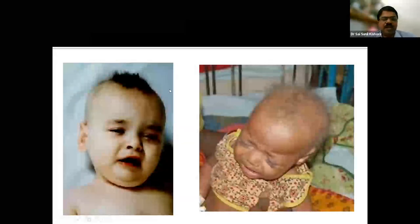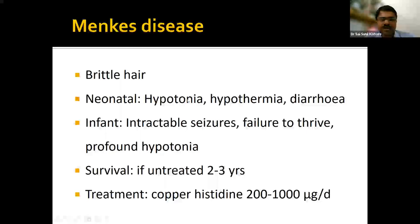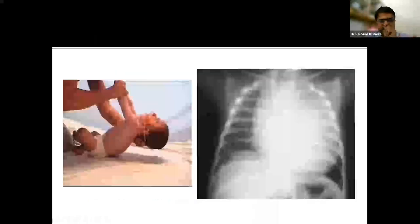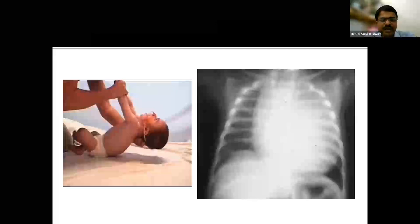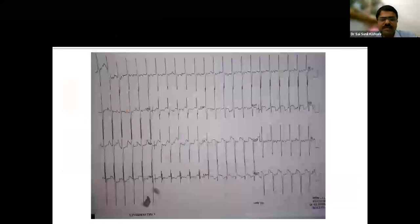Menkes disease presents with brittle hair, hypotonia, hypothermia, and intractable seizures with very poor prognosis; treatment is copper histidine. Pompe disease presents as a hypotonic baby with cardiomegaly and large voltage complexes in precordial leads on ECG.